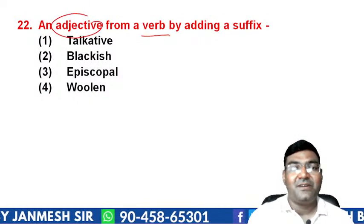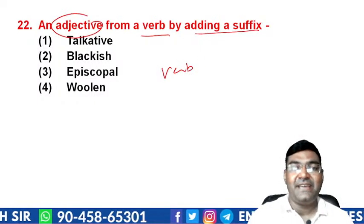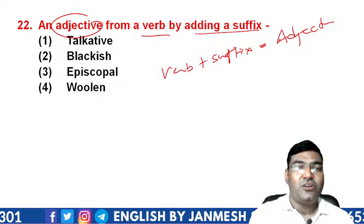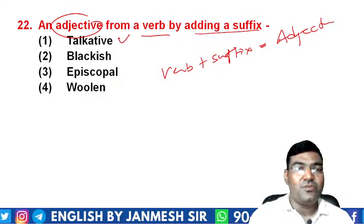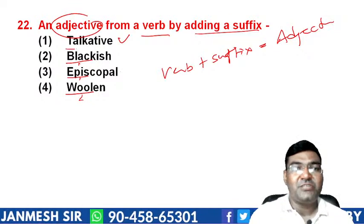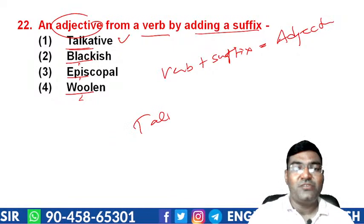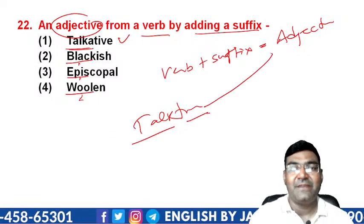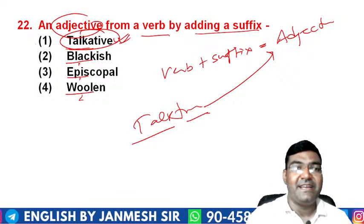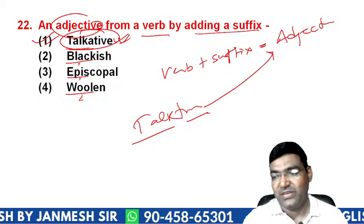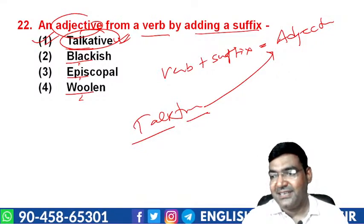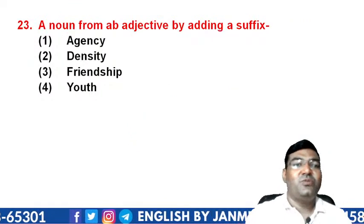Question 22: form an adjective from a verb by adding a suffix. Options are 'talkative', 'blackish', 'episcopal', or 'wool'. 'Black' is already an adjective, 'episcopal' comes from a noun, and 'wool' is a noun. But 'talk' is a verb, and adding the suffix '-ative' gives 'talkative', which is an adjective meaning talkative or garrulous. The answer is option A — 'talkative'.